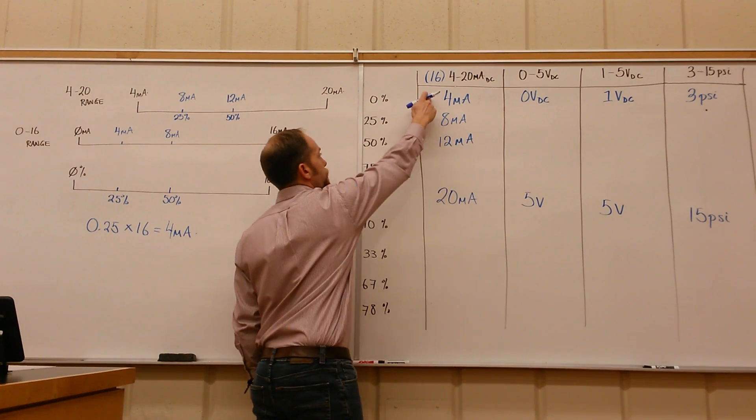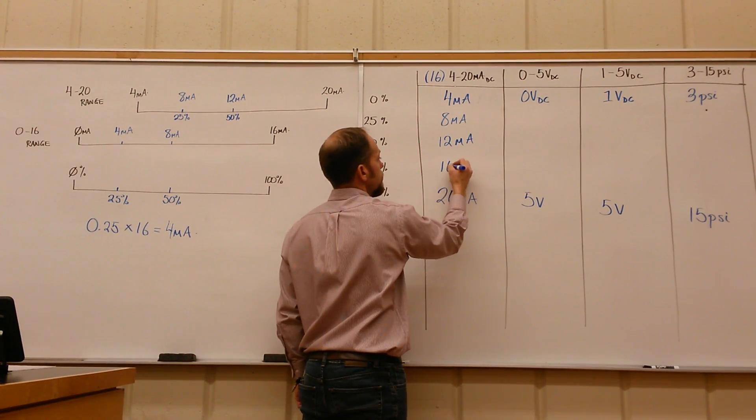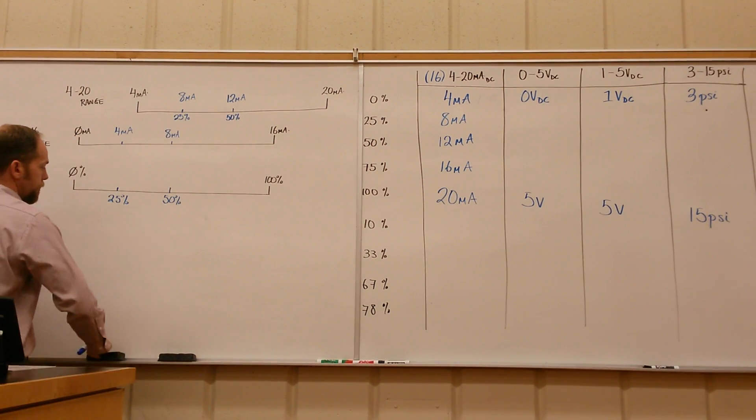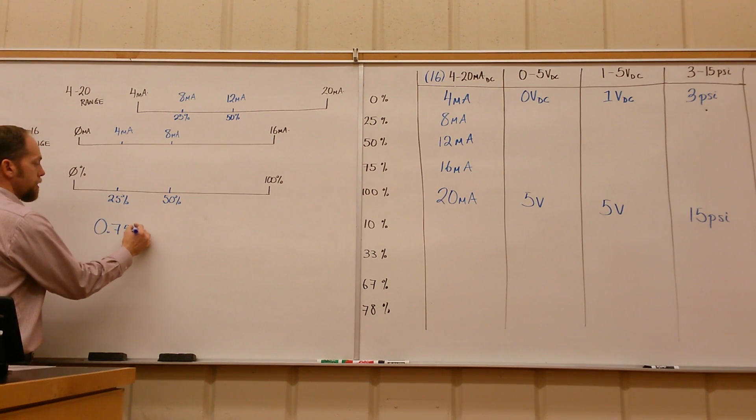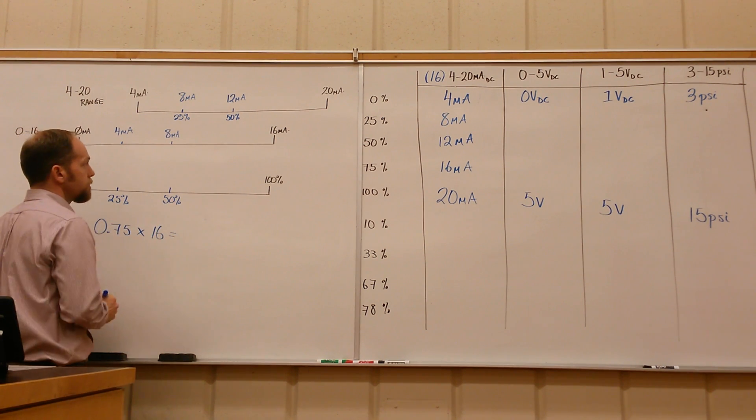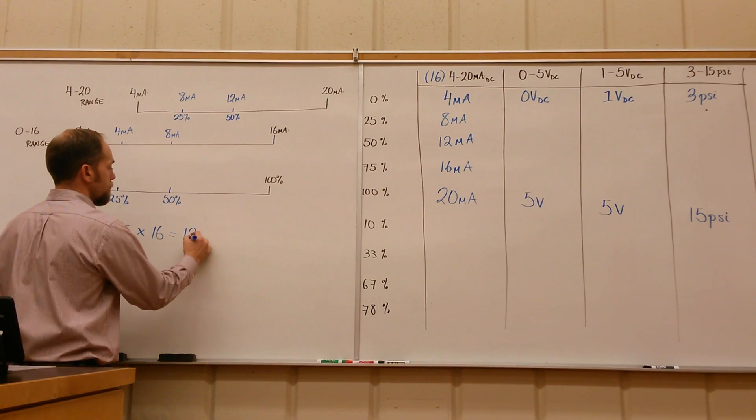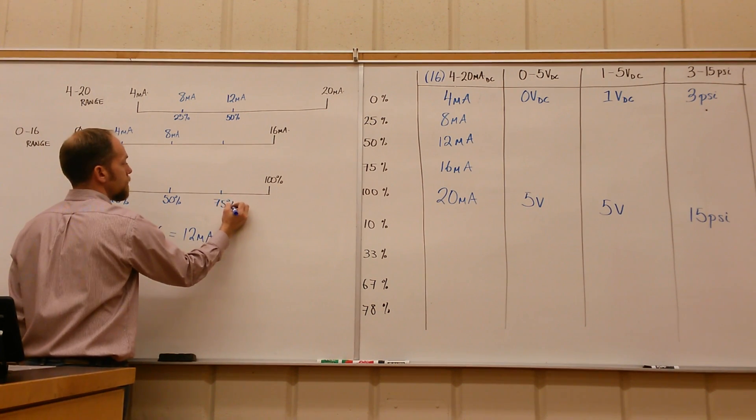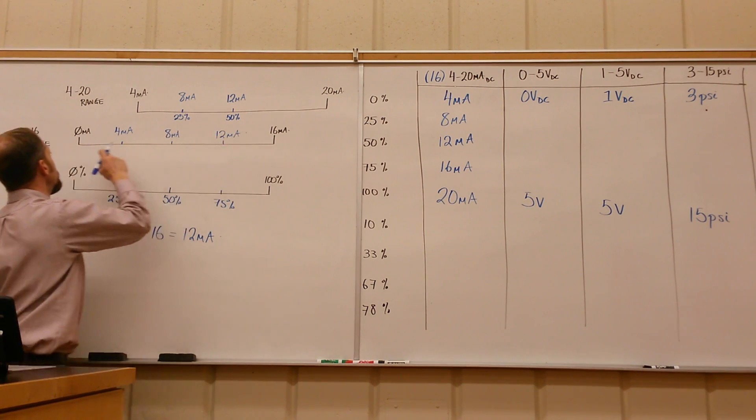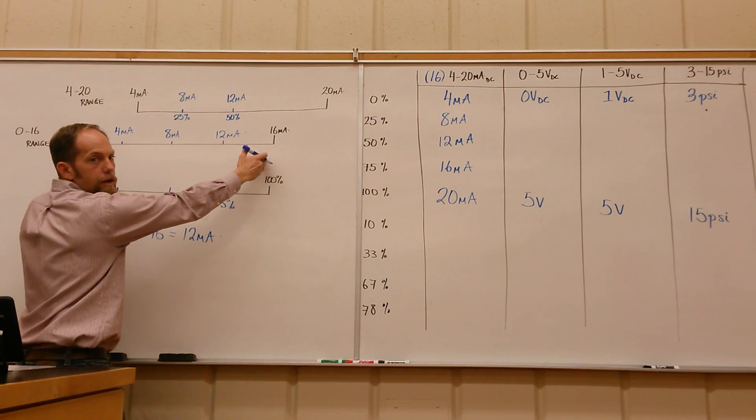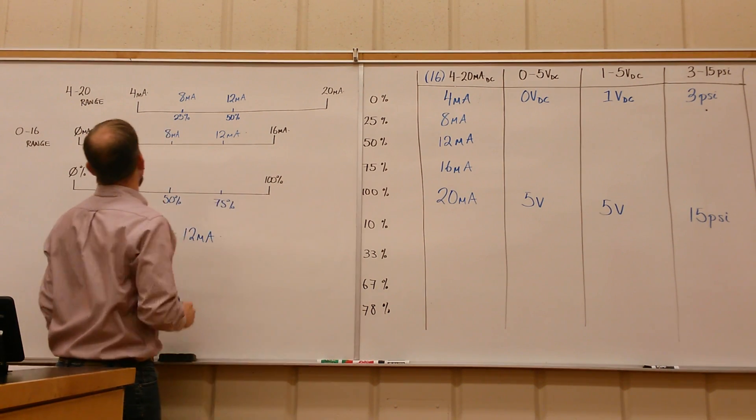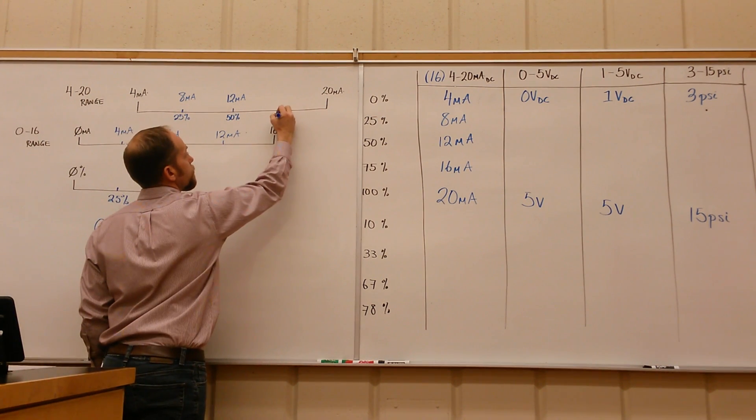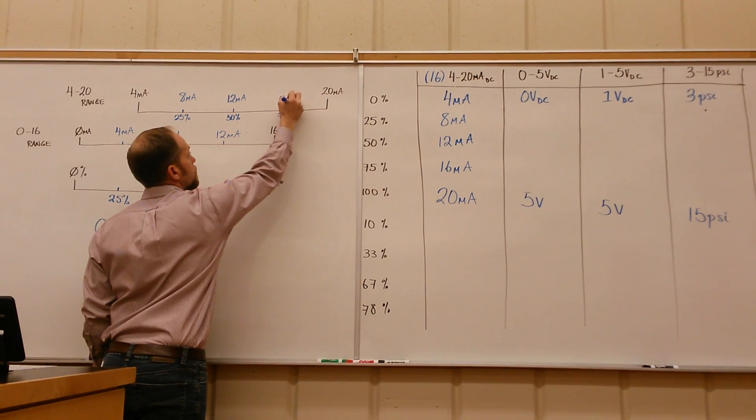Now it looks like everything goes up by 4. We've got 4, 8, 12. This guy is most likely 16 milliamps. Again, we could take 0.75, multiply that by your 0 to 16 range, and that ends up giving you 12 milliamps. So 75% of this range gives us 12 milliamps on the 0 to 16 range, and we're bumping it up by 4. So 12 plus 4, this guy ends up being at 75%, 16 milliamps.